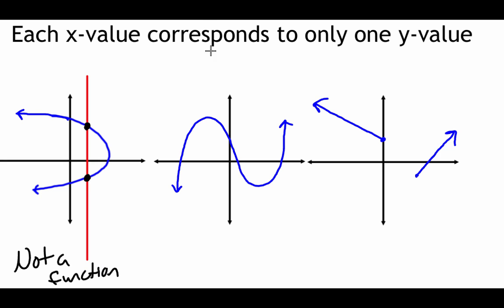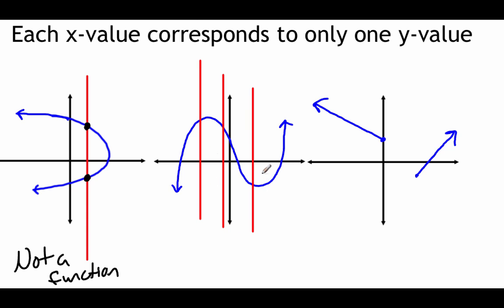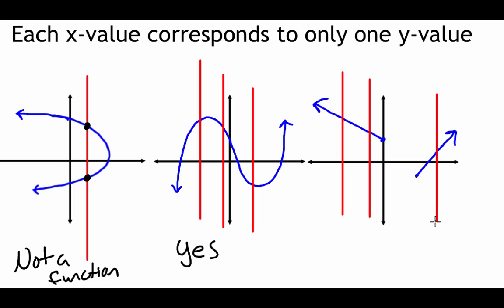Looking at the second graph, we can draw in a vertical line — it only intersects at one point. Any vertical line we draw through this graph only intersects at one point, so yes, this one is a function. For the next graph, drawing vertical lines: one intersection point, one intersection point, one intersection point. That last line has no intersection points — but the vertical line test says we cannot intersect at more than one point; it doesn't say anything about less than one point. So yes, this one is also a function.